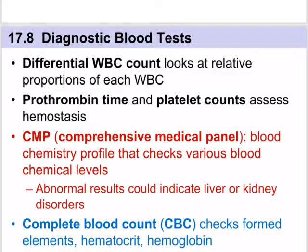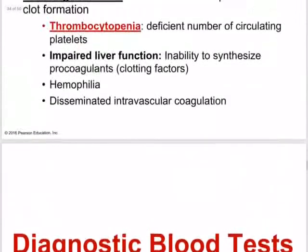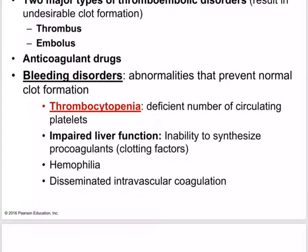There's one other bleeding disorder: disseminated intravascular coagulation. It can be a result of septicemia — infection in the blood — or it can happen from an incompatible blood transfusion or even as a complication of pregnancy. It's severe in that it leads to widespread blood clotting yet also severe bleeding simultaneously, so disseminated intravascular coagulation is something a person would want to avoid.